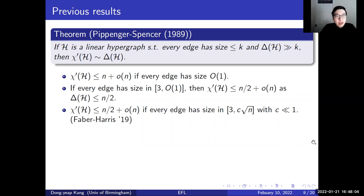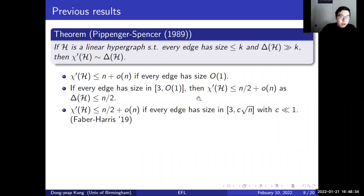One of the major works regarding hypergraph coloring is a result by Pippenger and Spencer in 1989, whose proof is based on Rödl's semi-random method. Their result says: if H is a linear hypergraph such that every edge has size at most k, and if the maximum degree is much larger than k, then its chromatic index is asymptotically equal to the maximum degree. So if our hypergraph H is an n-vertex linear hypergraph such that every edge has size at most some large constant, then its chromatic index is at most n plus o(n) by the Pippenger-Spencer result.